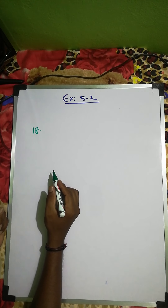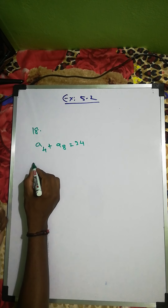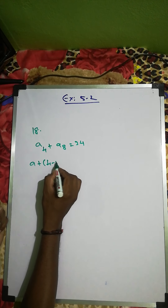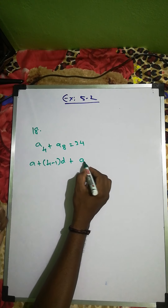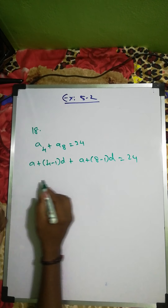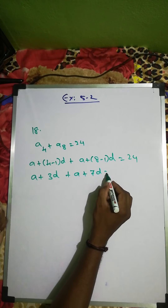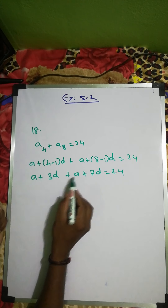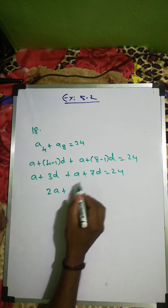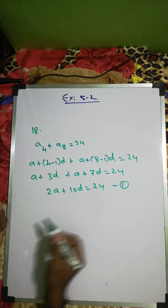Question number 18: the sum of the 4th and 8th terms is 24, so a4 + a8 = 24. That is (a + 3d) + (a + 7d) = 24, giving 2a + 10d = 24. This is equation one.